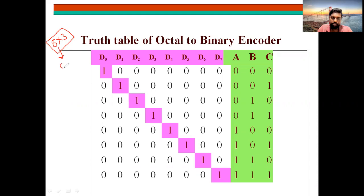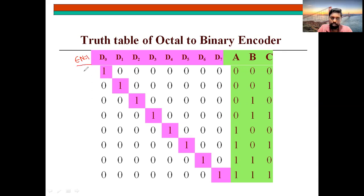8-to-3 is nothing but what you can call an octal-to-binary encoder. Why? Because there are 8 inputs. So this is the reverse of the 3-to-8 decoder. You can add one more column for enable, or you can write manually: if enable equals 1, then the truth table is given as shown. Either you can write a statement manually or you can add a column for enable and put all ones.